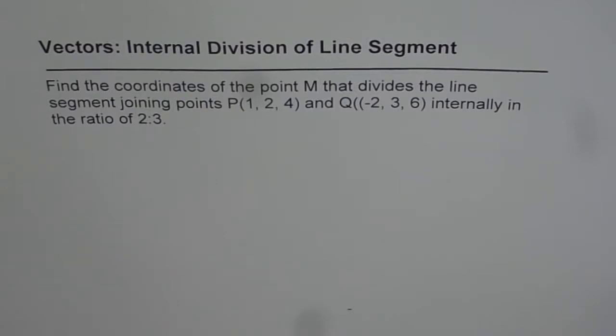The question is: find the coordinates of the point M that divides the line segment joining points P(1, 2, 4) and Q(-2, 3, 6) internally in the ratio of 2:3.